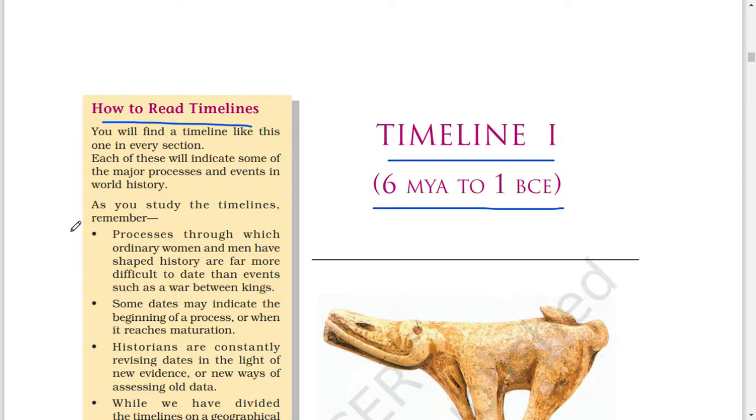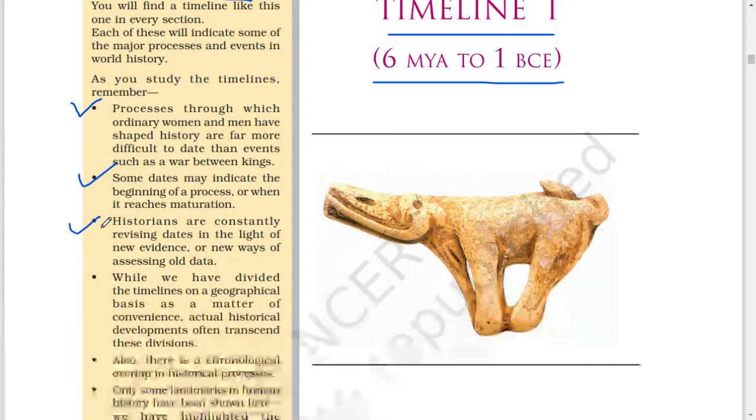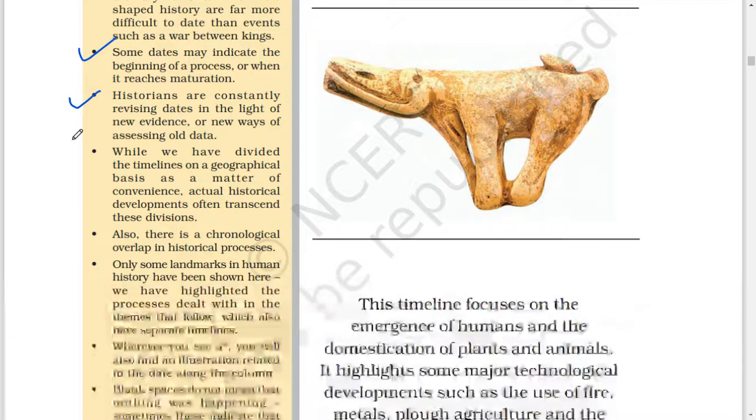Each of these will indicate some of the major processes and events in world history. As you study the timelines, remember processes through which ordinary women and men have shaped history are far more difficult to date than events such as a war between kings. Some dates may indicate the beginning of a process or when it reaches maturation.